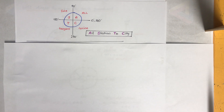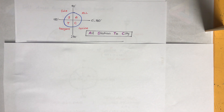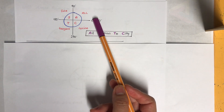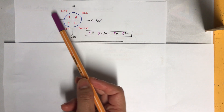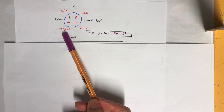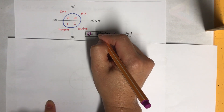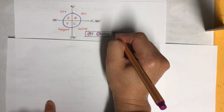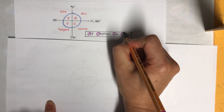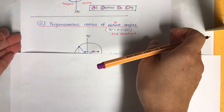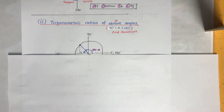To summarize — you may have heard the mnemonic 'All Stations To City' or similar. First quadrant: all three trig ratios are positive. Second quadrant: only sine is positive. Third quadrant: only tangent is positive. Fourth quadrant: only cosine is positive. Just remember A, S, T, C to help memorize this easily.